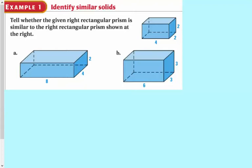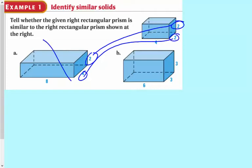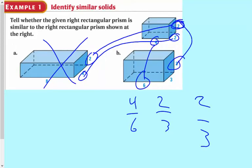Here it says tell whether the given right rectangular prism is similar to the right rectangular prism shown at the right. So we're going to see which one is similar to this one. Here I have 2 to 2, so that's a 1 to 1 ratio, and then I have 4 to 2, so it can't be that one. Let's see, 4 to 6 is 2 to 3, and 2 to 3, so it's going to be this one here because these all reduce: 4 to 6 is 2 to 3 and 2 to 3. So there you go, that's our winner right there.